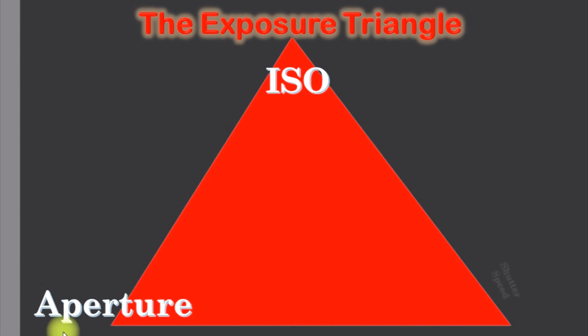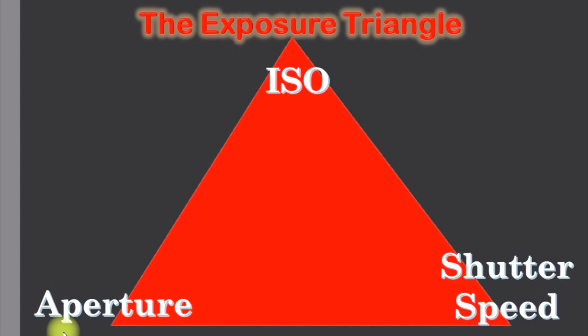Our final component of exposure is shutter speed. Shutter speed is simply the amount of time that the camera's lens stays open when you snap the picture. For most pictures, this is just a small fraction of a second.